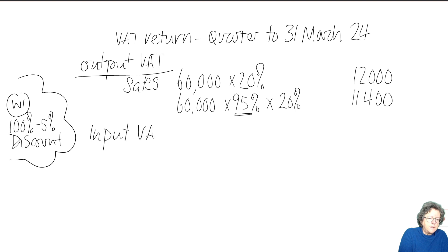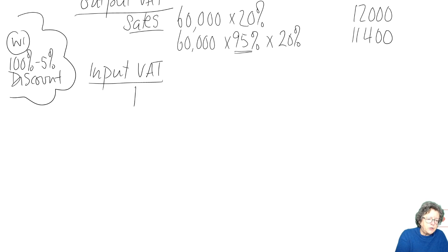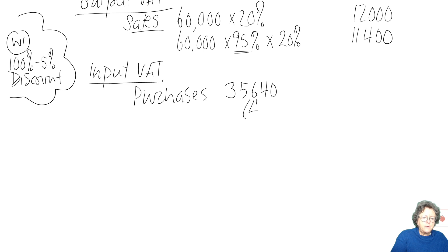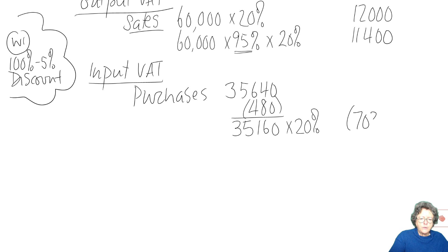Moving to input VAT — a fairly straightforward part. The purchases were 35,640. We take off 480 because that was for entertaining, which isn't allowed. The remaining 35,160 is multiplied by 20%, giving input VAT of 7,032. Make sure you show your workings clearly to demonstrate to the examiner exactly what you've done.